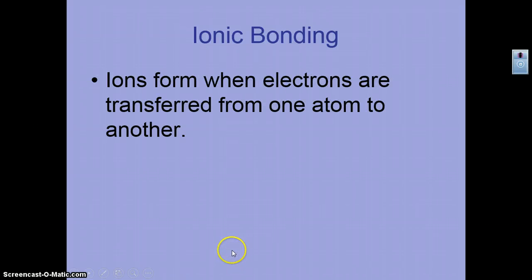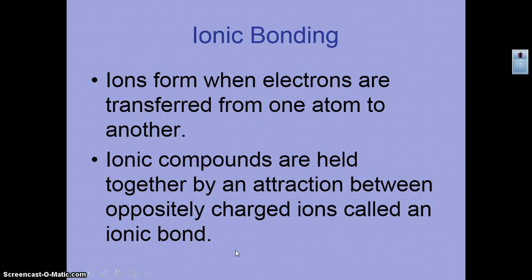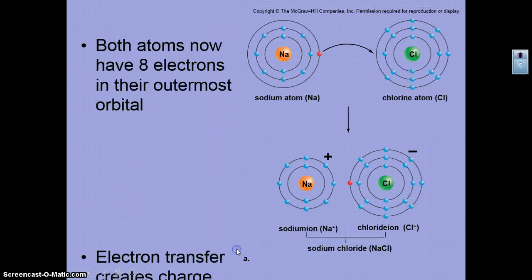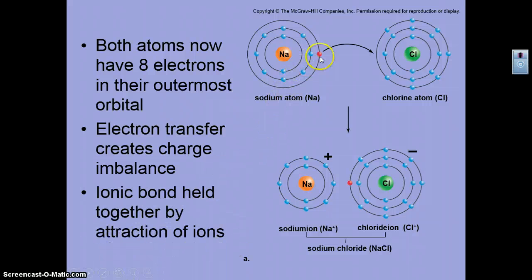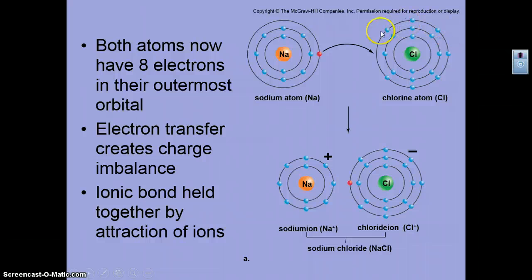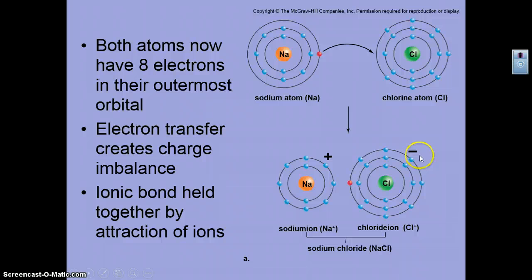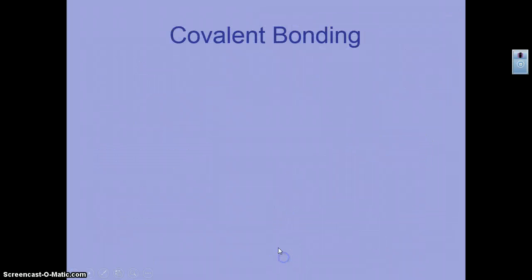Ionic bonding occurs when electrons are transferred from one atom to another, producing ions, and that attraction holds them together. The classic example is sodium and chlorine: sodium has one electron in its outer orbital, and if it loses that electron it achieves a stable outer shell of eight. Chlorine has seven in its outer shell and gains that electron to reach eight — satisfying the octet rule. Sodium becomes +1 and chlorine becomes -1, and that charge holds the ionic compound together.